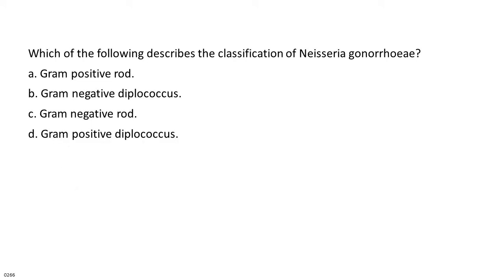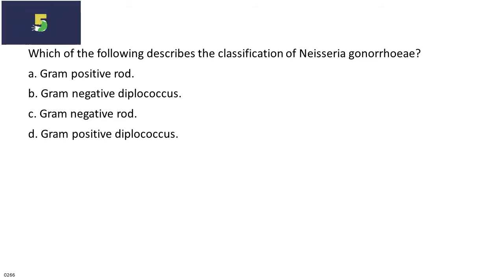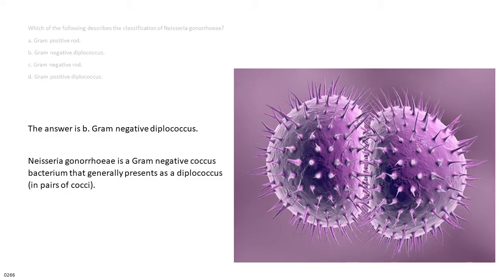Which of the following describes the classification of Neisseria gonorrhoeae? A. Gram-positive rod. B. Gram-negative diplococcus. C. Gram-negative rod. D. Gram-positive diplococcus. The answer is B. Gram-negative diplococcus. Neisseria gonorrhoeae is a gram-negative coccus bacterium that generally presents as a diplococcus, in pairs of cocci.